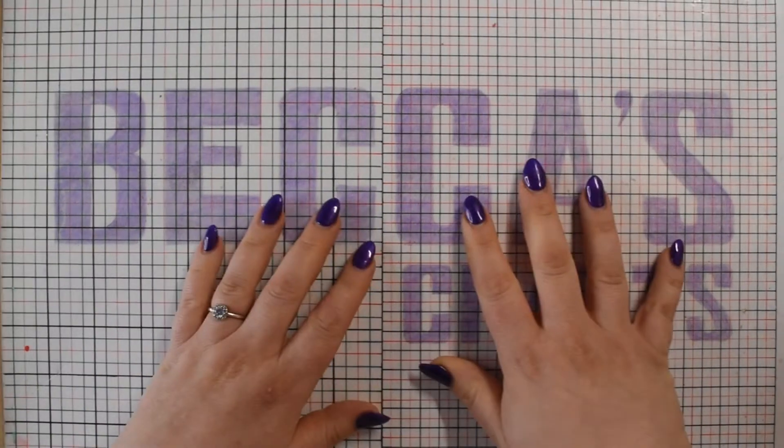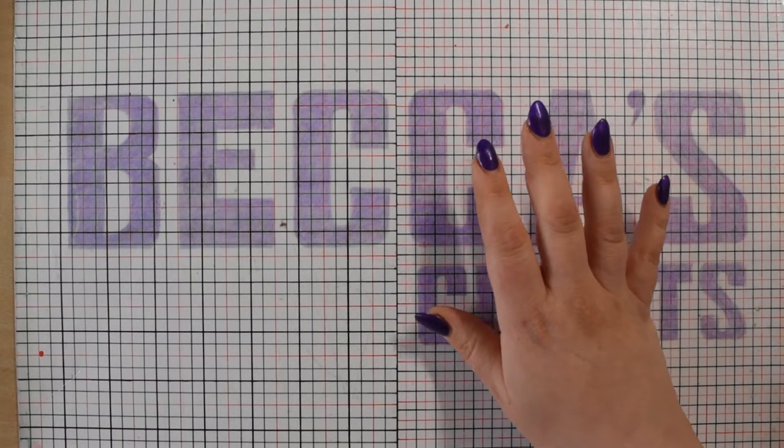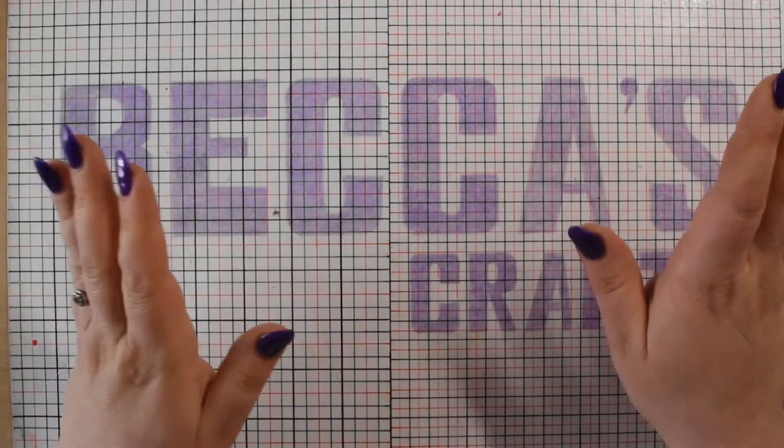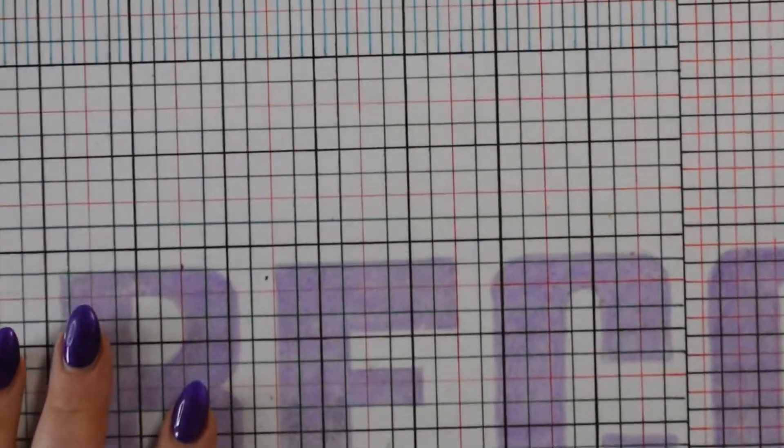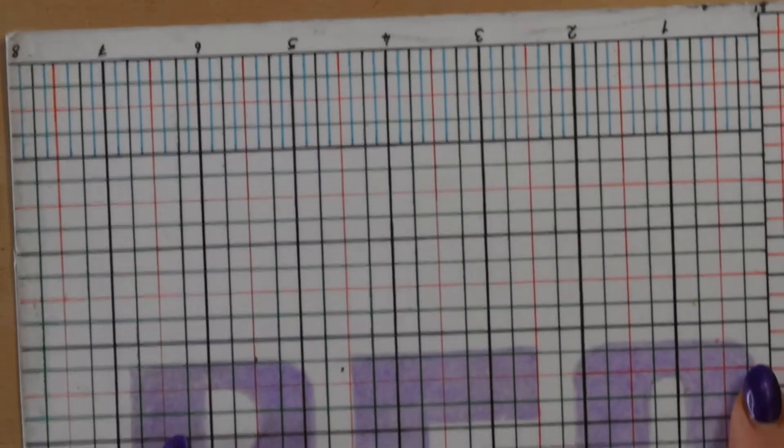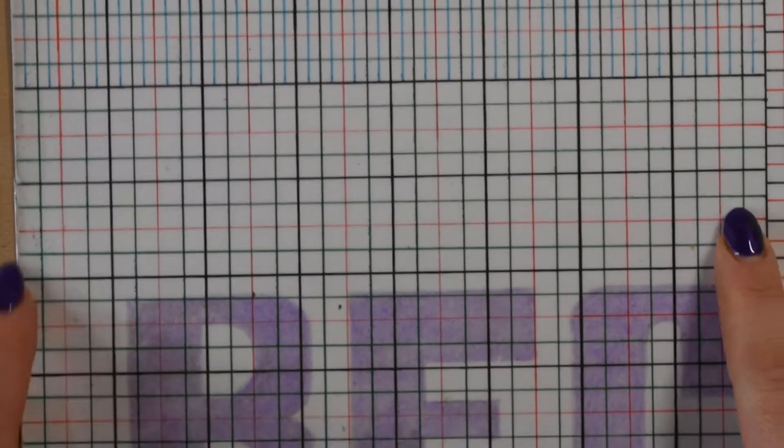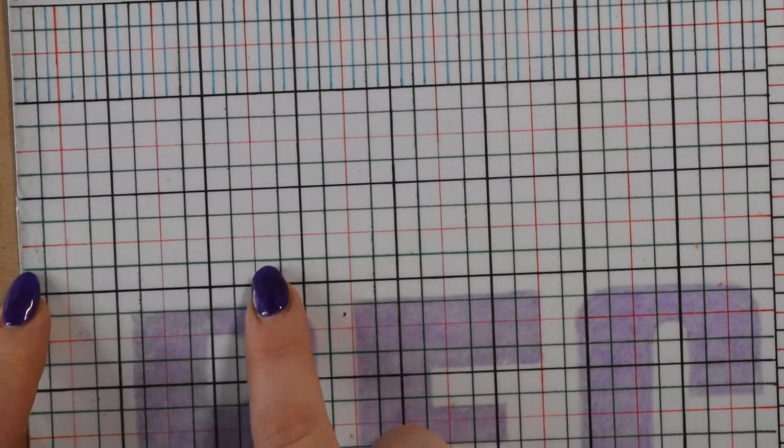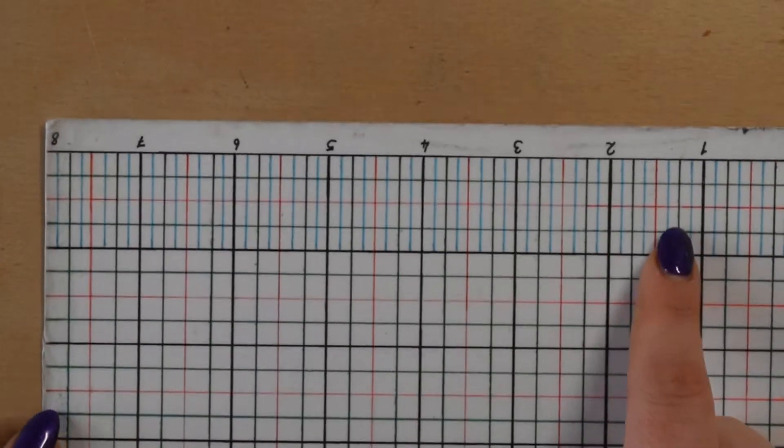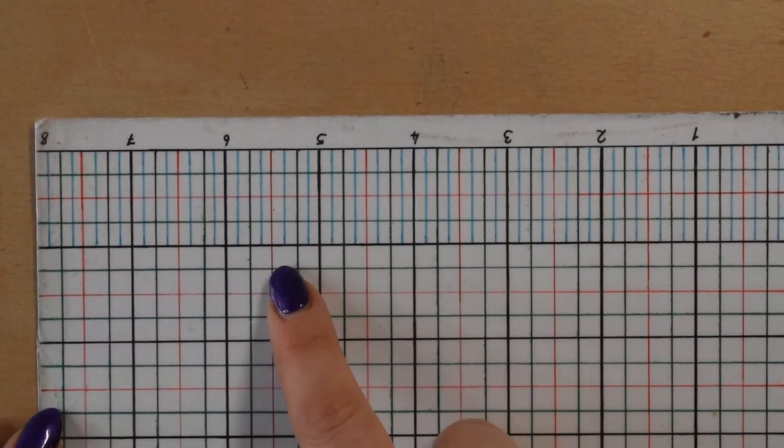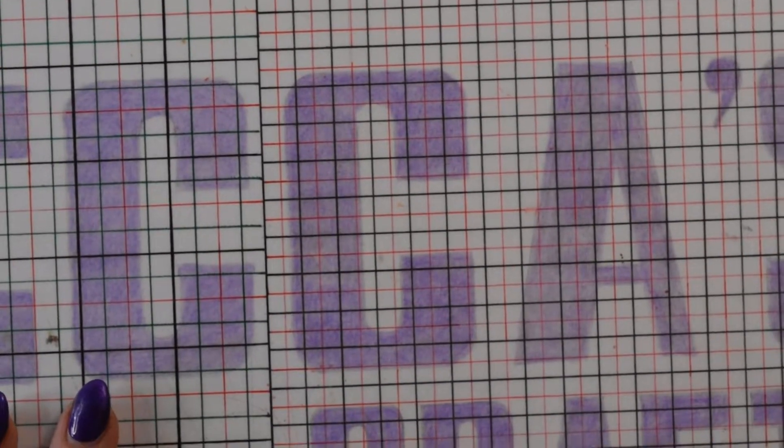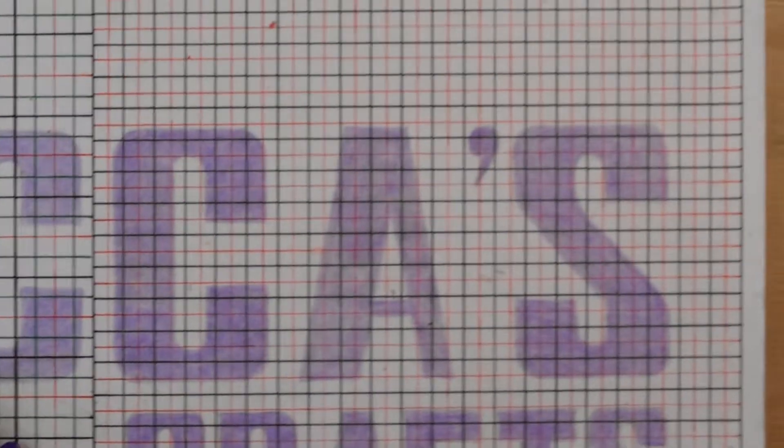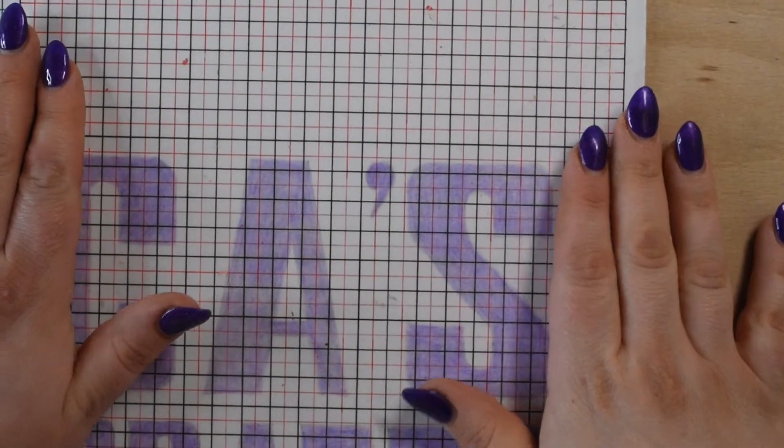As you can see on this side, he did me inch squares and then divided it into halves and quarters. He also did eighths and sixteenths. You don't have to do that many, it's up to you however many you do.